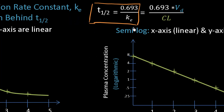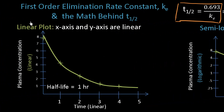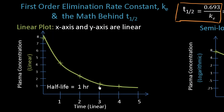We drew a first order elimination rate graph using a linear plot and said the half-life was equal to 1 hour. Starting at 8, we went down to 4 after 1 hour, then to 2, to 1, to 0.5, to 0.25.